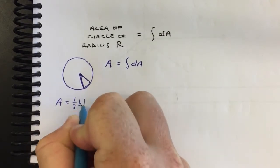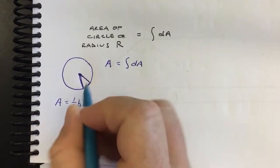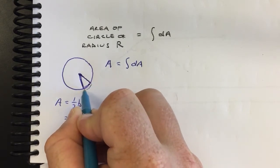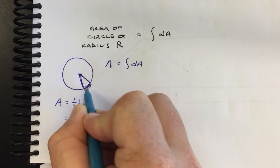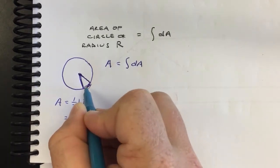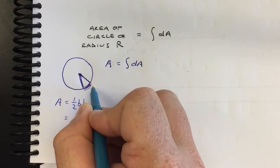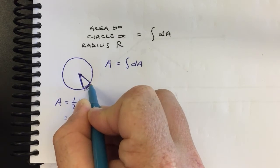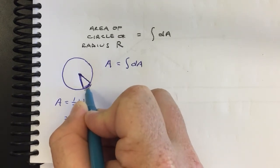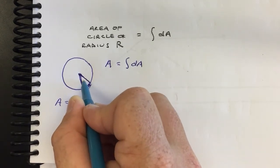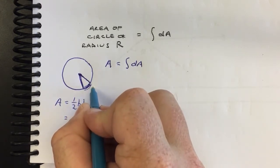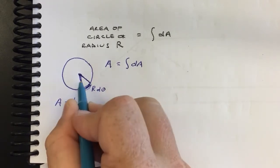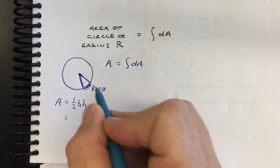The area of that little wedge is half the base times the height, since it's a triangle. The base is this little bit of arc. For arc length you learned in algebra 2 that s = rθ, but here we have a really tiny wiggle, so this little bit of length is r·dθ, because dθ means a teeny tiny wiggle in theta.